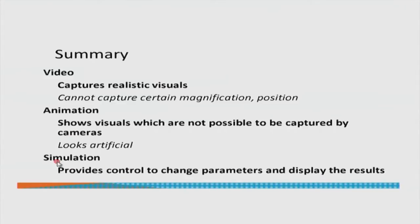Is it always better to go for a simulation since it seems to be the most high-end — because it can actually simulate every instance and the equation is very realistic — or is it enough to show a video where the student is just passively observing? That is the question we want to now answer. Simulations are not only accurate, they could also provide control to change parameters and display the results. Suppose we leave aside the terminology of whether I am going to call it a video, animation, or simulation — many people get stuck in this terminology.